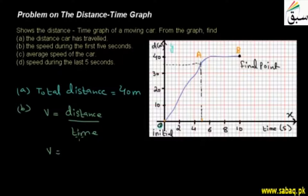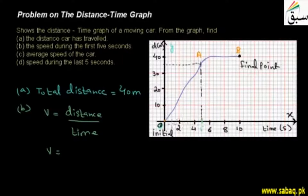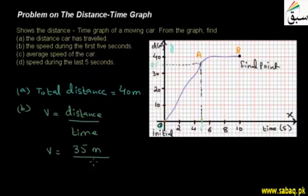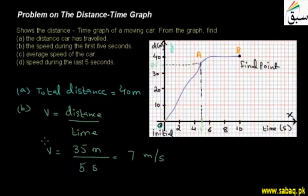We will find out the distance for the first 5 seconds. If we look at the graph — the first block is at 2 seconds, the next at 4 seconds — at 5 seconds, the distance travelled on the Y-axis is 35 meters. So distance is 35 meters and time is 5 seconds. If we divide 35 by 5, the answer is 7 meters per second. We have found the speed for the first 5 seconds.